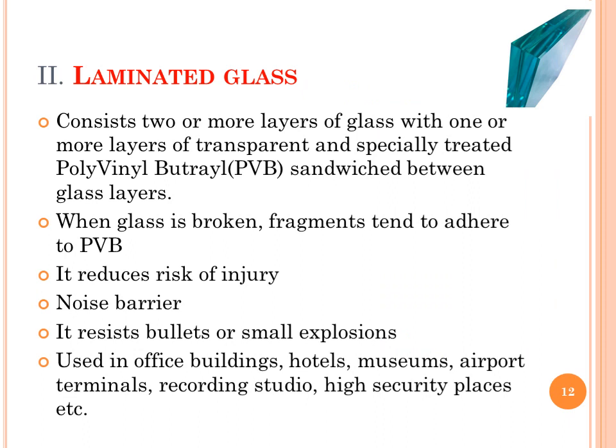So till now we have seen the various types of normal glass or annealed glass. Now the second type of architectural glass is laminated glass. It consists of two or more layers of glass with one or more layers of transparent and specially treated polyvinyl butyral or PVB sandwiched between glass layers. When the glass is broken, fragments tend to adhere to the PVB, which reduces risk of injury. It also acts as a noise barrier and reduces the impact of bullets or small explosions.